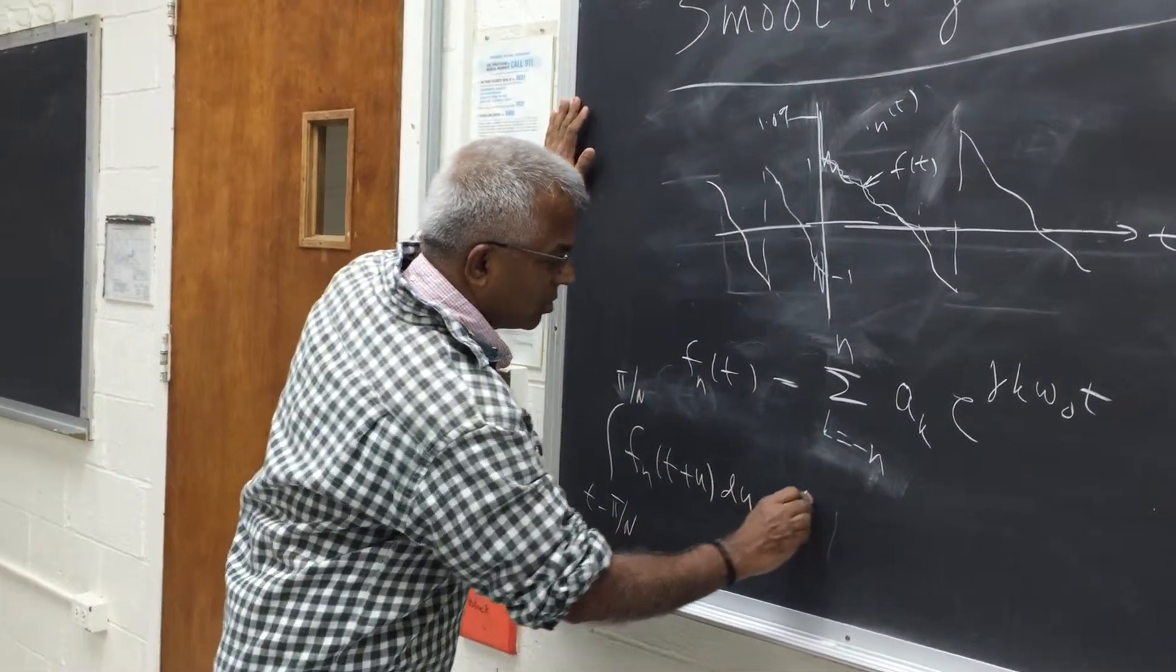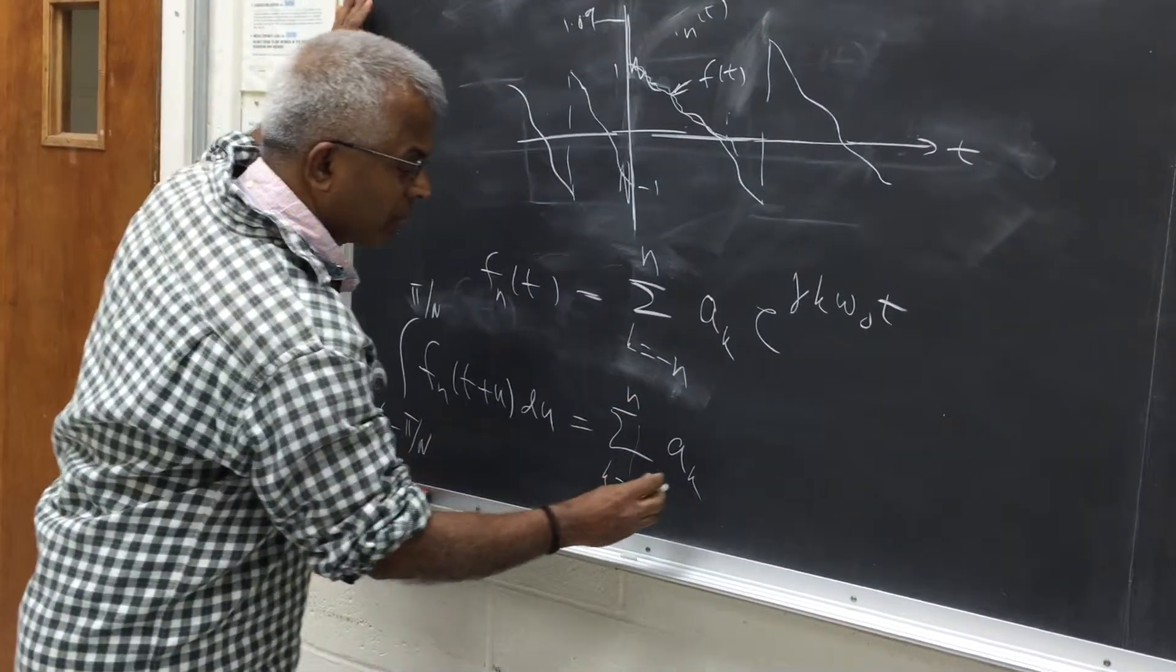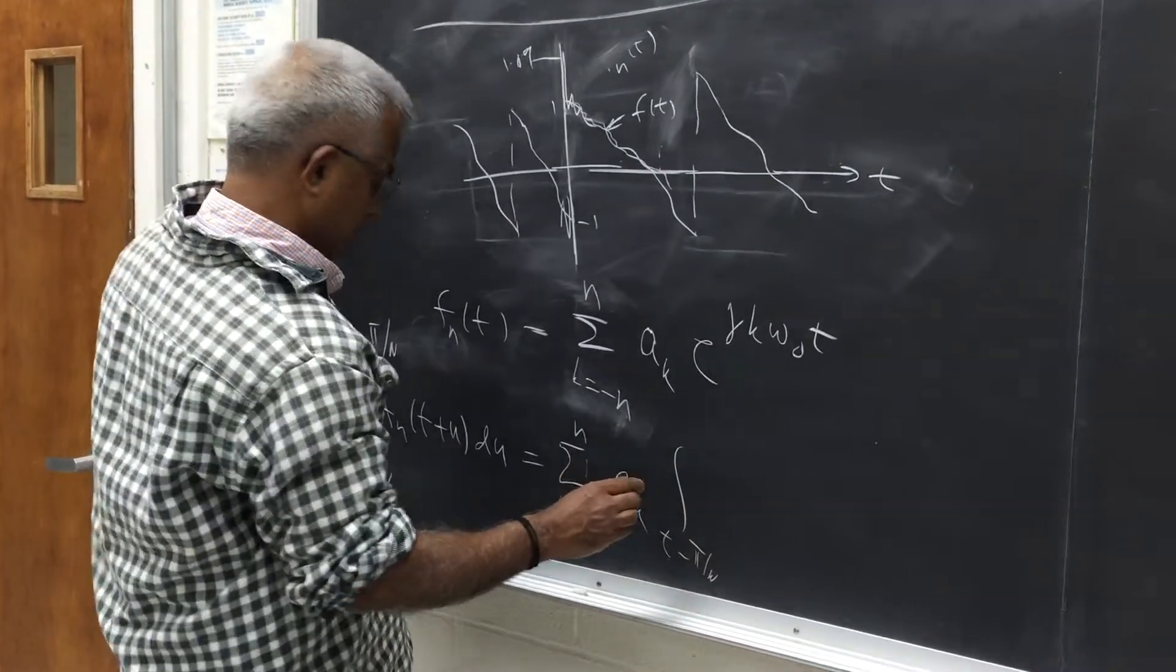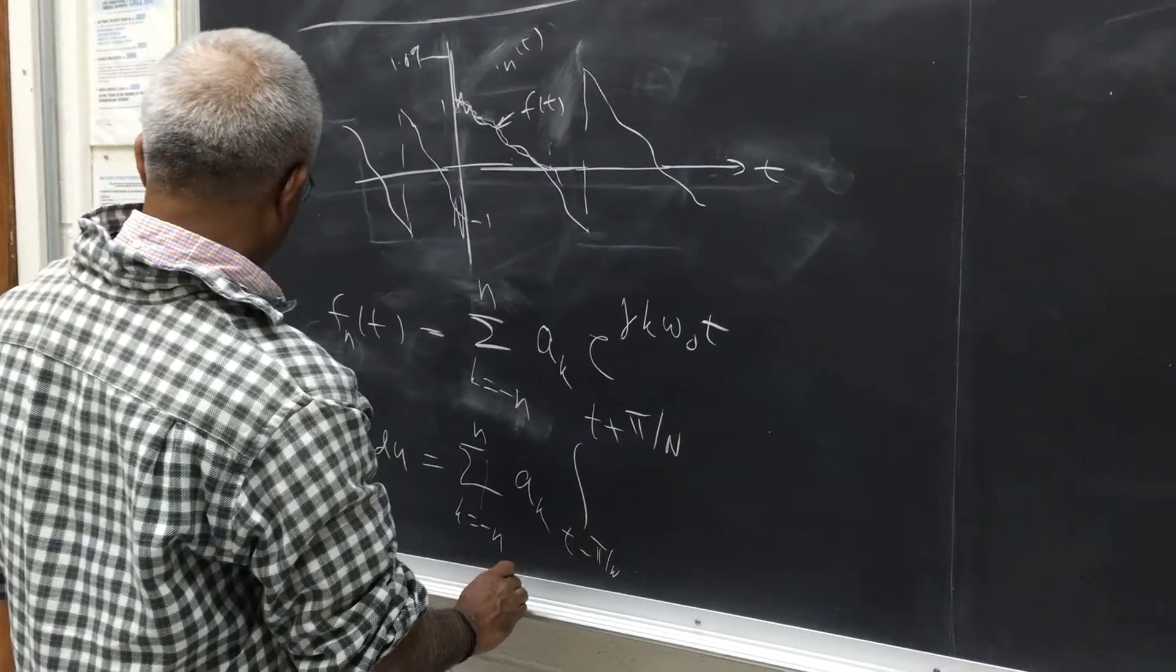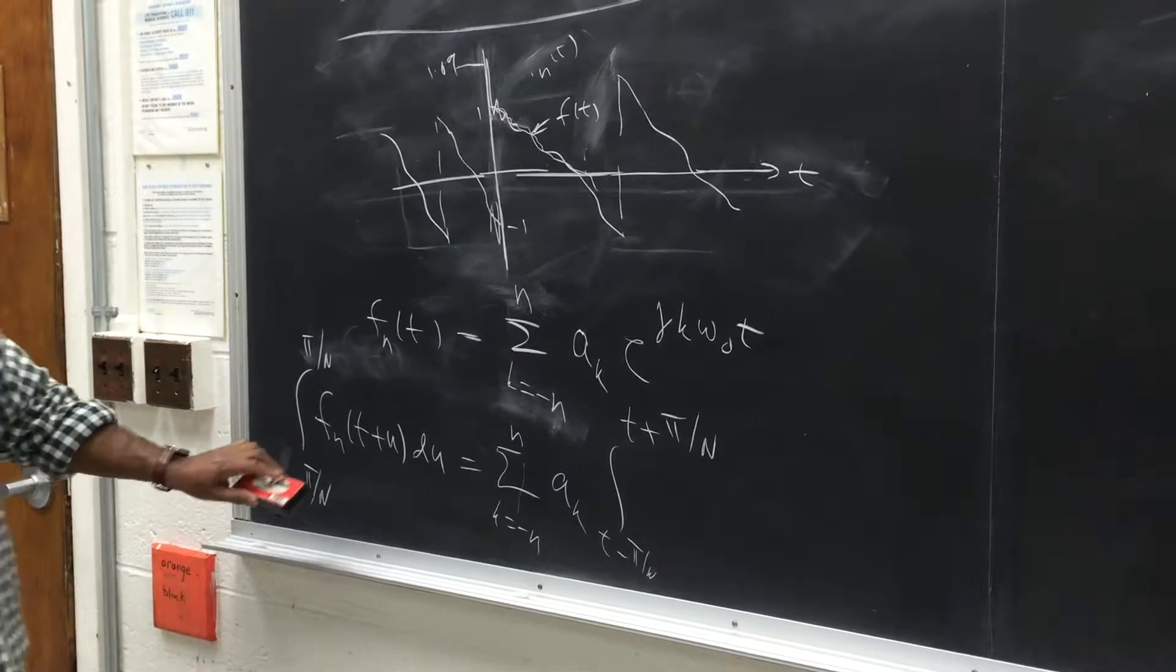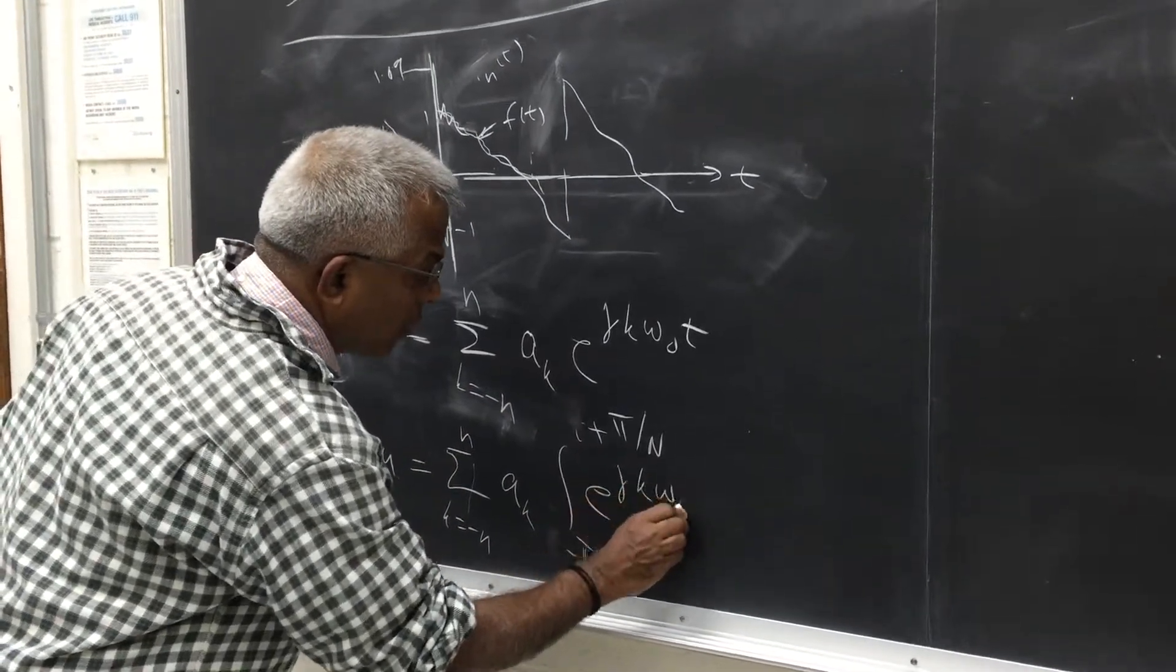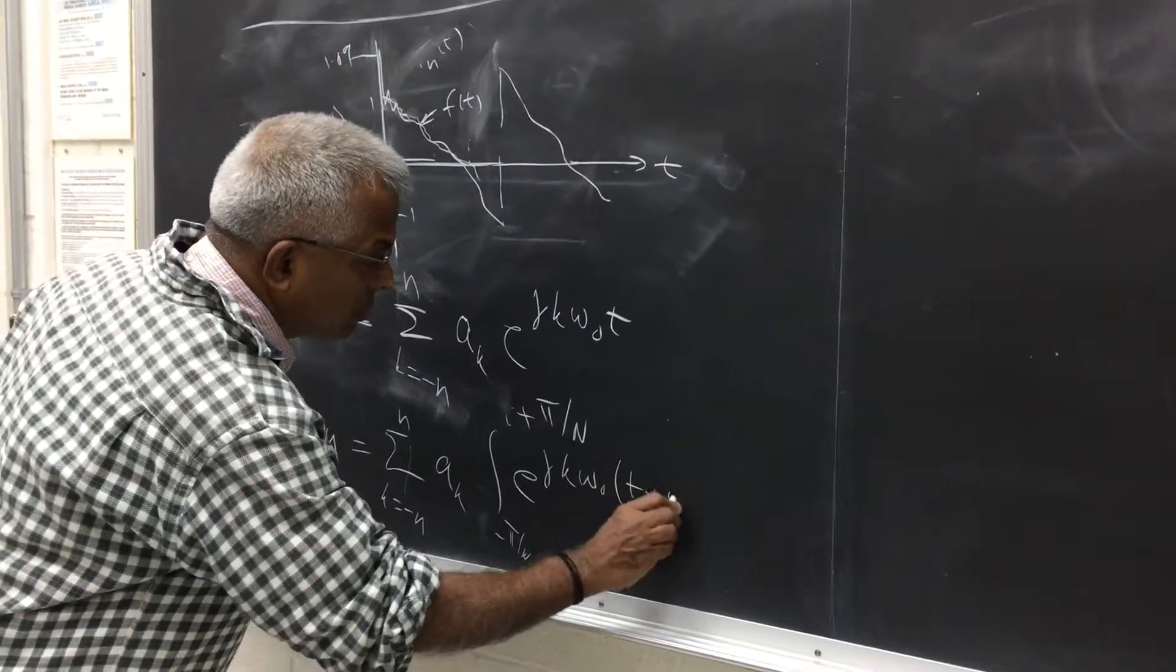So if you do this on the right side then this is a_k, k is from minus n to n, integral from t minus pi over n to t plus pi over n. In fact the limit only needs to go from minus, because u is going from minus pi over n to pi over n. So this is e raised to j k omega_0 (t plus u) du.